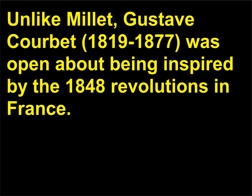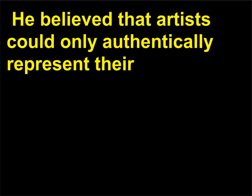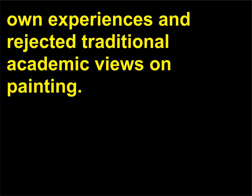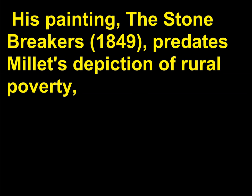Who was Gustave Courbet? Unlike Millet, Gustave Courbet (1819–1877) was open about being inspired by the 1848 revolutions in France. He was known for his socially radical beliefs and his loyalty to his hometown of Ornans, near the border with Switzerland. He believed that artists could only authentically represent their own experiences and rejected traditional academic views on painting. He disliked history painting and believed that art could not be taught. His painting The Stone Breakers (1849) predates Millet's depiction of rural poverty.